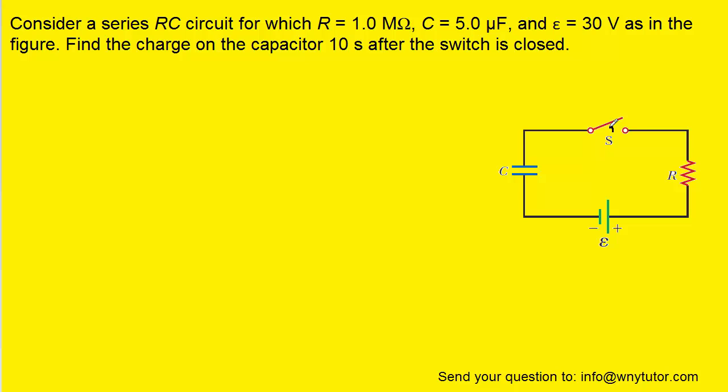In this question, what's going to happen after the switch is closed is that the capacitor is going to charge. And as the capacitor charges, it obeys the following equation, where we have the charge after some amount of time equal to the maximum charge times this term in parentheses, which includes time, resistance, and capacitance. What we need to note is that the maximum charge on the capacitor is represented by the capacitance times the voltage.